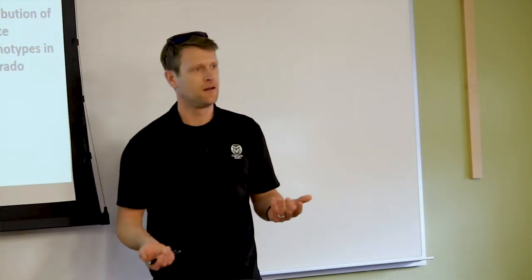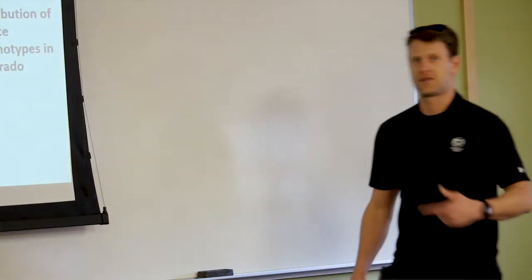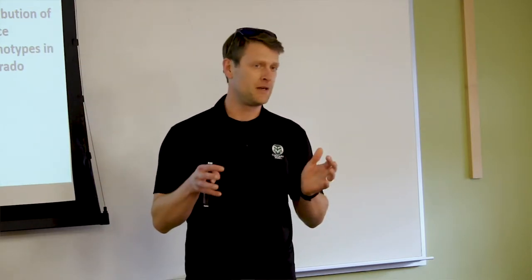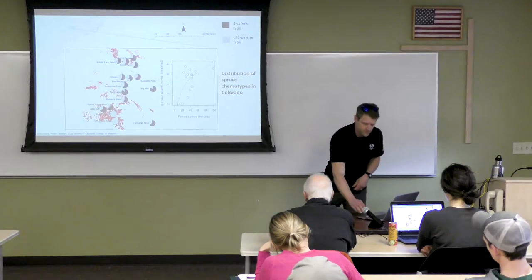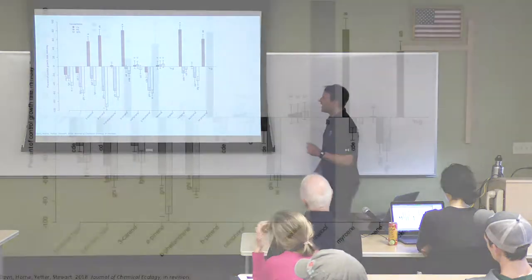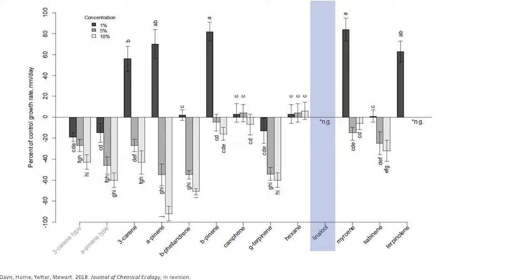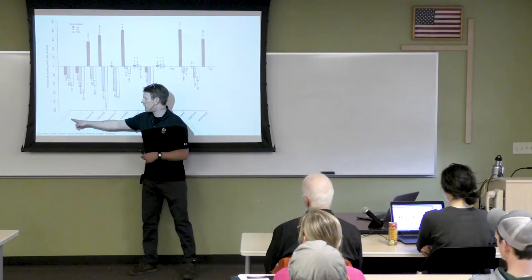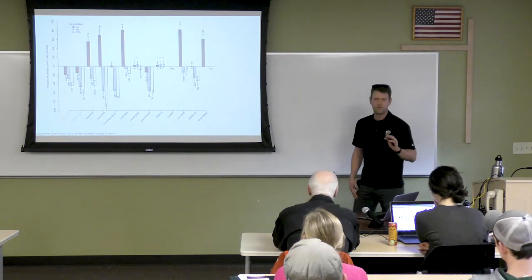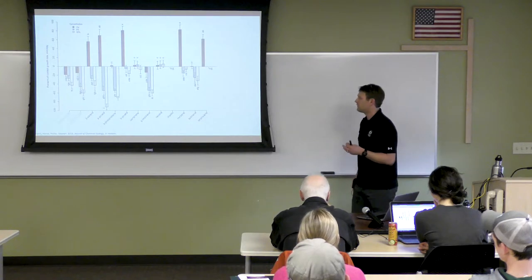Why is that happening? One hypothesis could be that it's due to interactions of these phenotypes with these symbiotic fungi that may be driving these patterns on the landscape. What you're looking at here is the performance of about 20 genetically distinct isolates of the symbiotic fungus in response to every single one of these tree compounds, as well as blends of compounds representing the two chemical types.